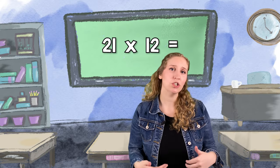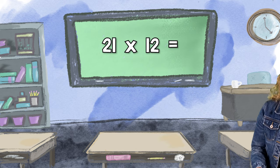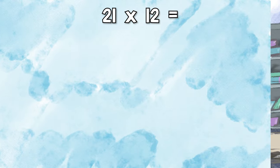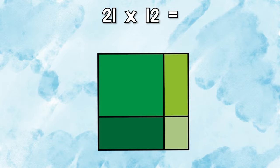Alright, now that we've tried one digit by multiple digits, let's try a two-digit by two-digit problem. 21 times 12. This box model will look a little different. Since both numbers have two digits, we're going to need to break both numbers down by place value. So this is what the area model will look like.